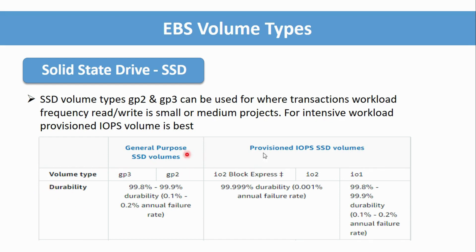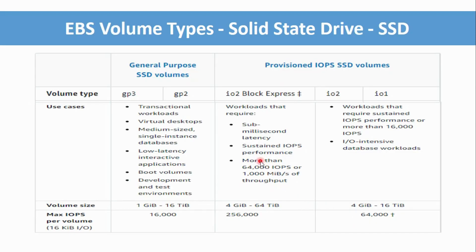As you can see here, there is a comparison table of volume types. GP3 and GP2 are compared, and from my exploration I found that GP3 is better than GP2 in terms of both cost and performance. You can see the durability and the Provisioned IOPS comparison as well. If you want to read all the details, you can pause the video.